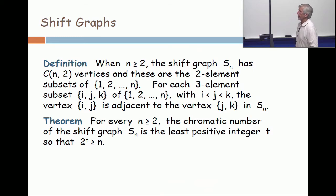The theorem is that for every n ≥ 2, the chromatic number of the shift graph S_n is exactly (not approximately) the least positive integer t so that 2^t ≥ n.